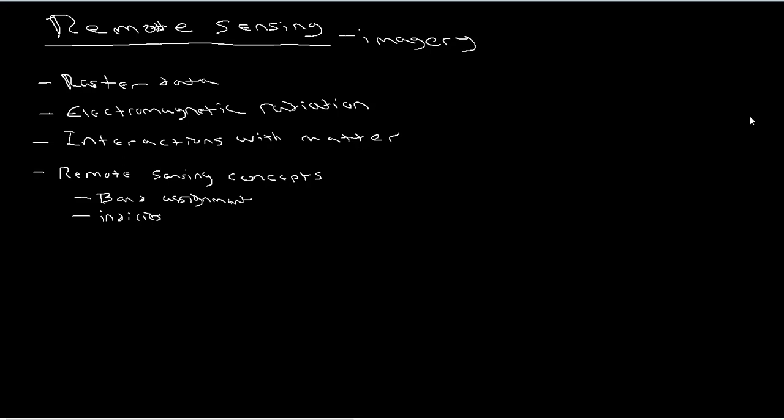Hello everyone and welcome back to another GIS lecture video. In this lecture video I want to begin our discussion on remote sensing by talking about our first topic, which is raster data. Hopefully this is going to be mostly a review as we've already talked about raster data previously, but I want to bring it up again, make sure everyone's on the same page, and highlight a couple of new features specific to dealing with imagery.